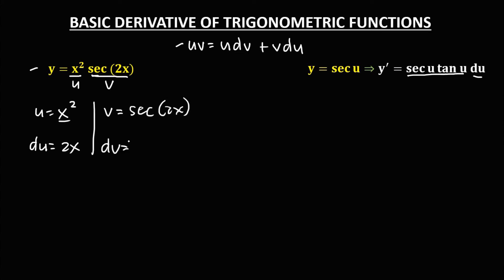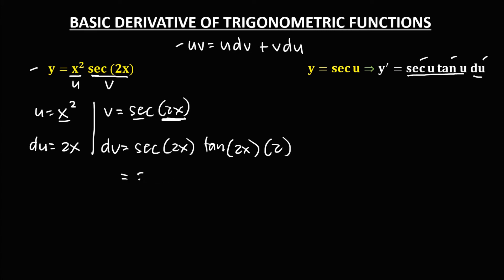For the derivative of u, the derivative of x² is 2x. For the derivative of v — since the derivative of sec is sec(u)·tan(u) — we have sec(2x)·tan(2x) times the derivative of 2x, which is 2. So dv = 2·sec(2x)·tan(2x). Now we substitute u, v, du, and dv into the product rule formula.